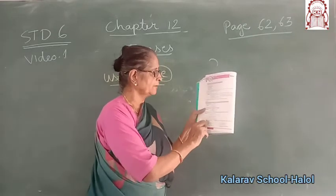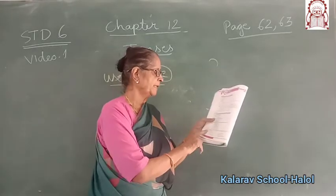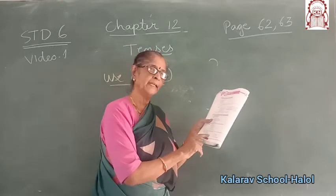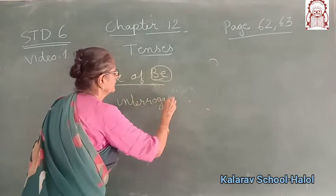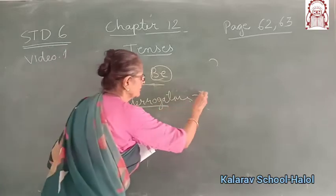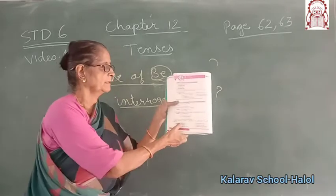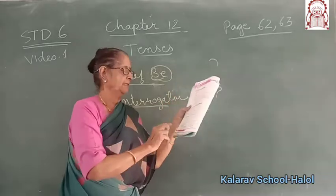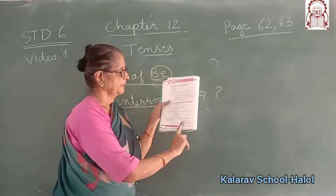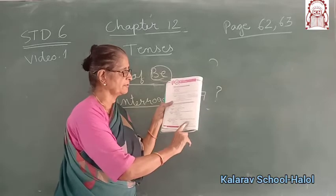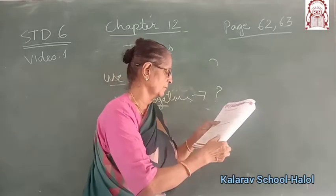To make interrogative sentences, we generally use the various forms of the verb 'be' at the beginning of the sentence. Interrogative means questions. Examples: 'Were they late?' 'Will they be late?' 'Will they not be late?' 'Is the flight delayed?' 'Are the artists ready?' 'Were the books distributed?' This was page number 62, completed.